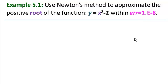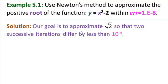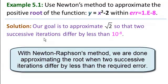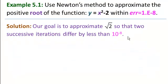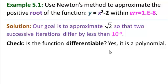What is our goal here? Our goal is to approximate the square root of 2 so that two successive iterations differ by less than your error, which here is 10 to the minus 8. We need to check, is the function differentiable? Yes, it's a polynomial.